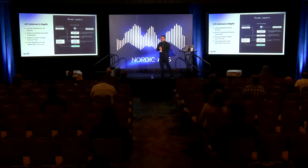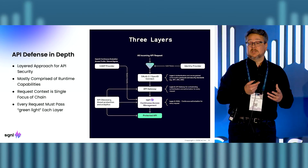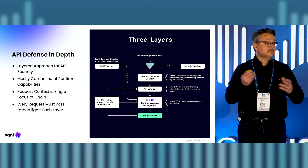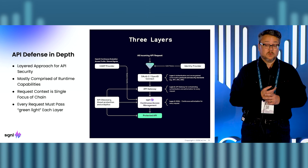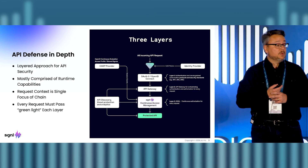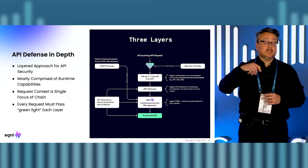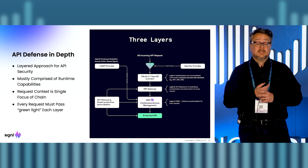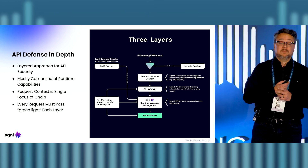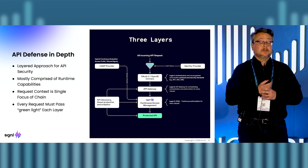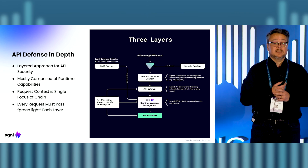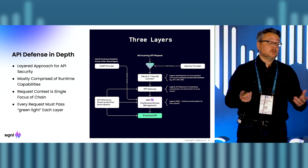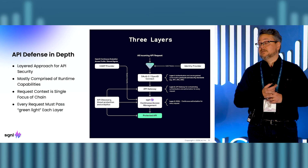Last but not least is the dynamic access control layer, or the authorization platform, that inspects these API requests coming in through the identity provider and the API gateway, and then gives a yes or no back to the API gateway like Kong. This works through the implementation of security plugins in your middleware, or in the Kong API gateway.